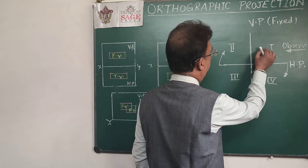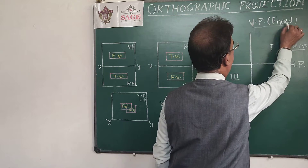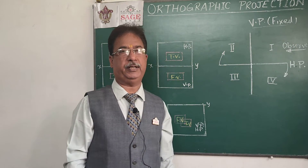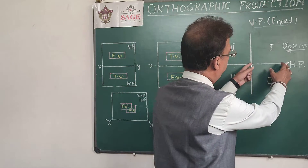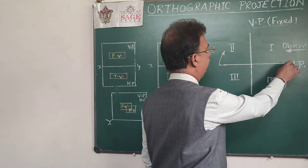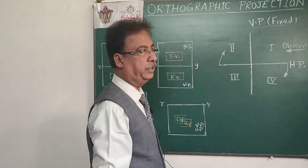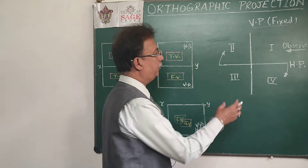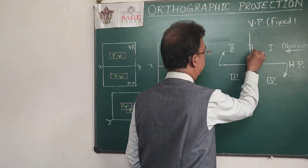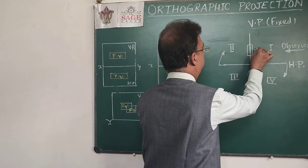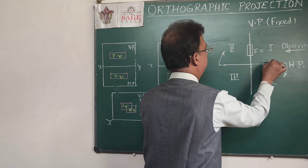When the object is in the first quadrant, the front view will be on the VP and the top view will be on the HP. We keep the VP fixed, and the HP rotates in the clockwise direction — the front portion goes down and the back portion goes up. So for an object in the first quadrant, we get the front view on VP and the top view on HP.